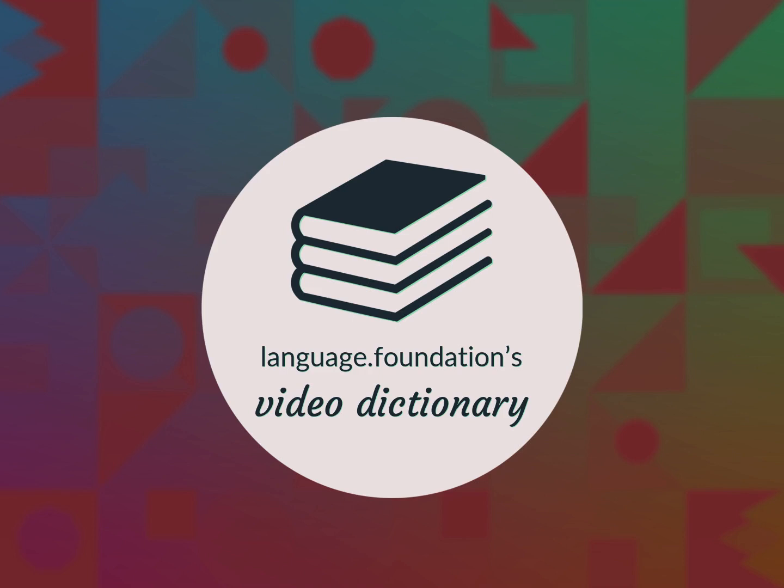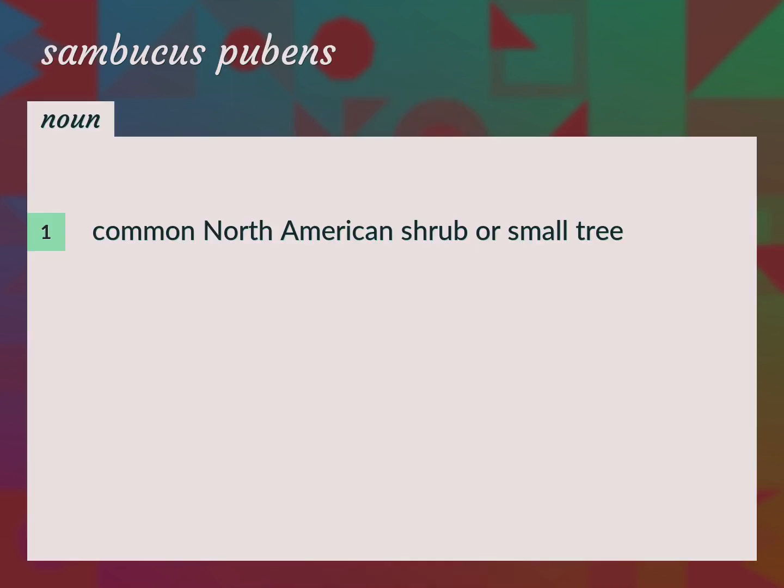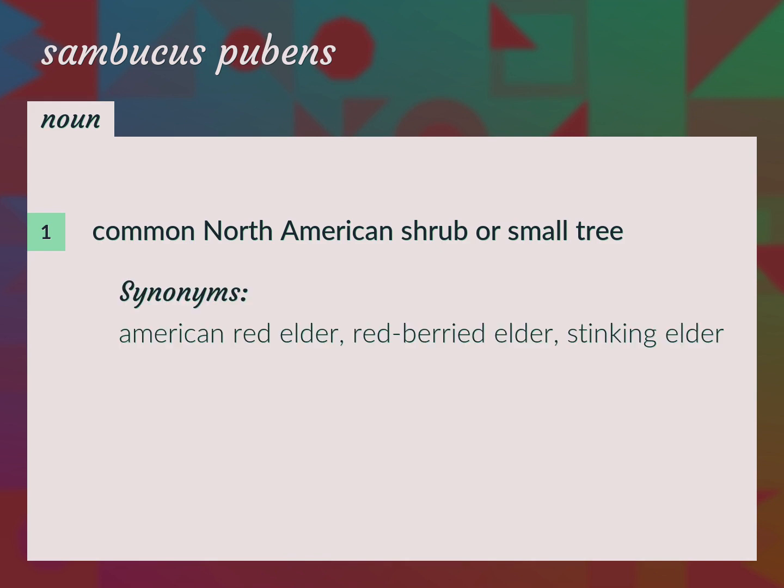Language.Foundation's Video Dictionary, helping you achieve understanding. Common North American shrub or small tree: American Red Elder, Red-Berried Elder, Stinking Elder.